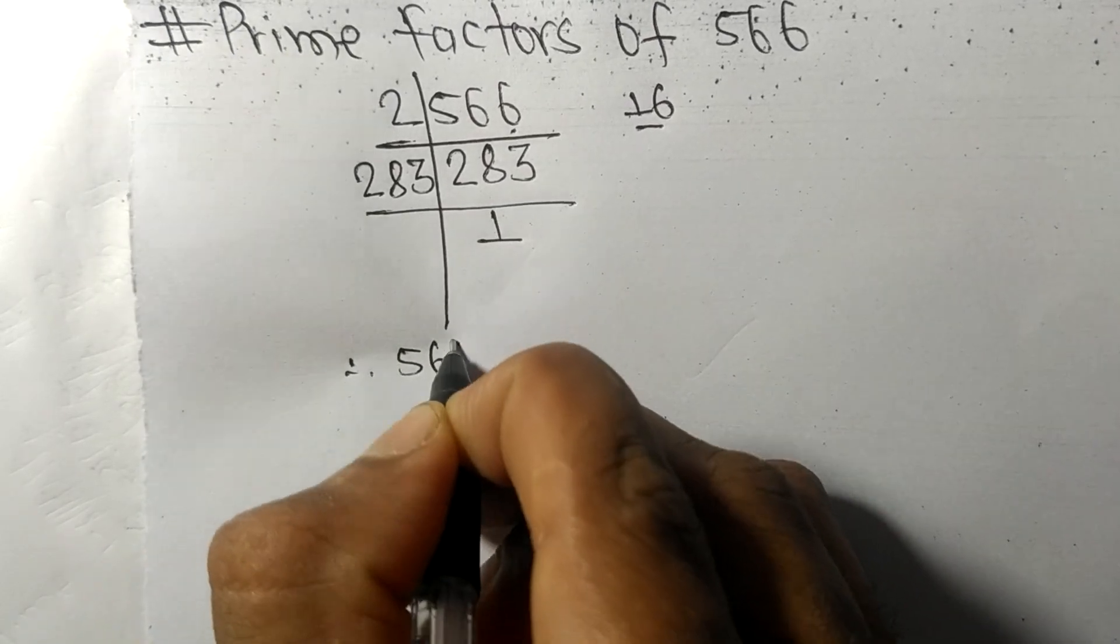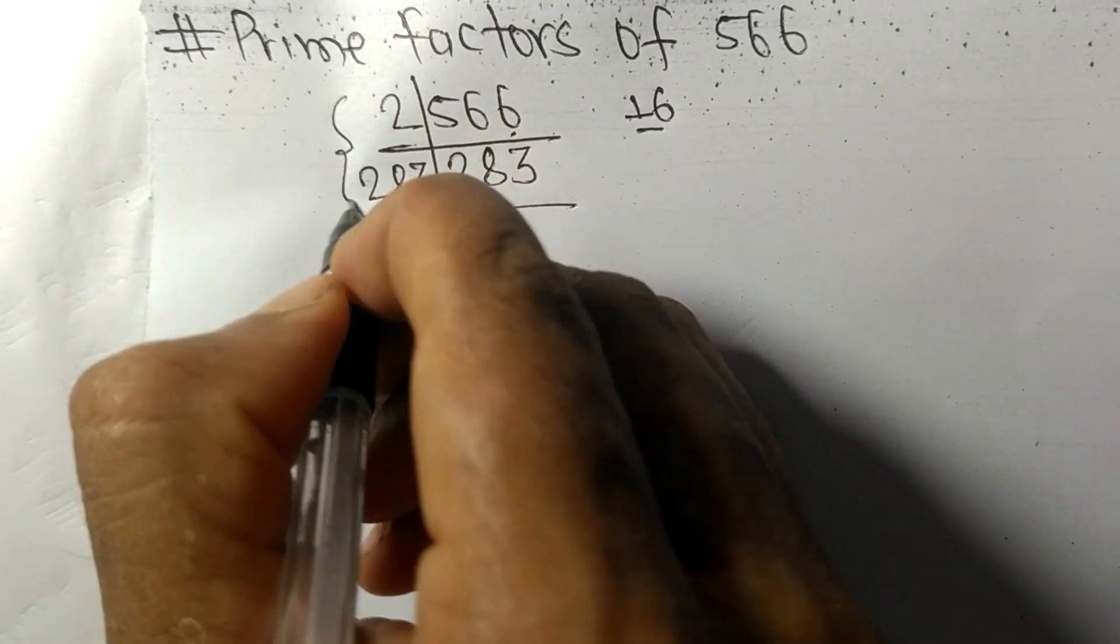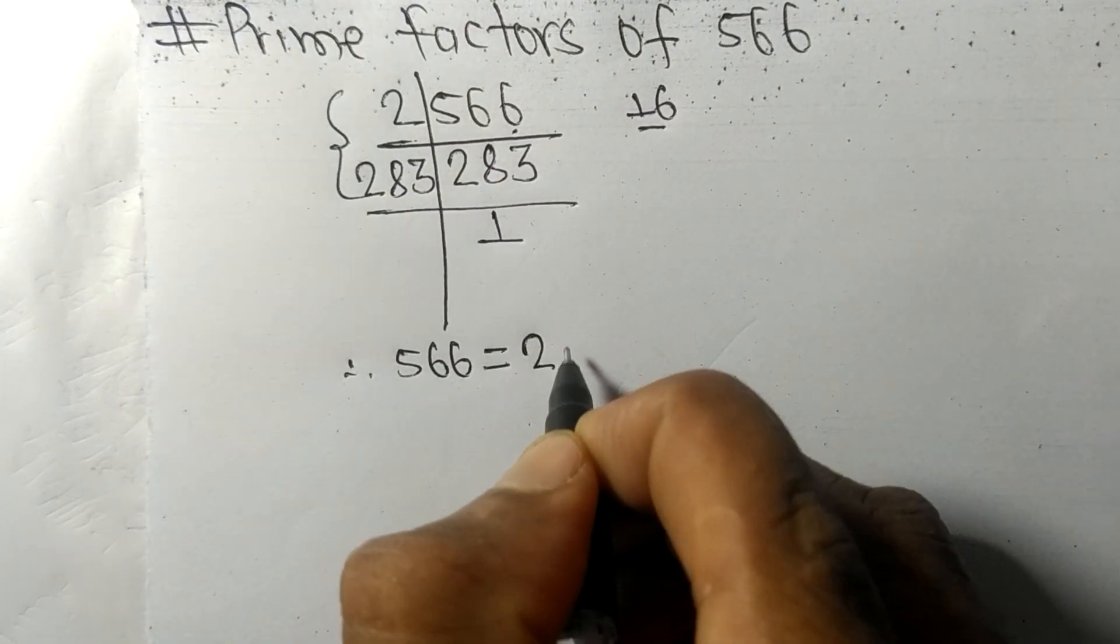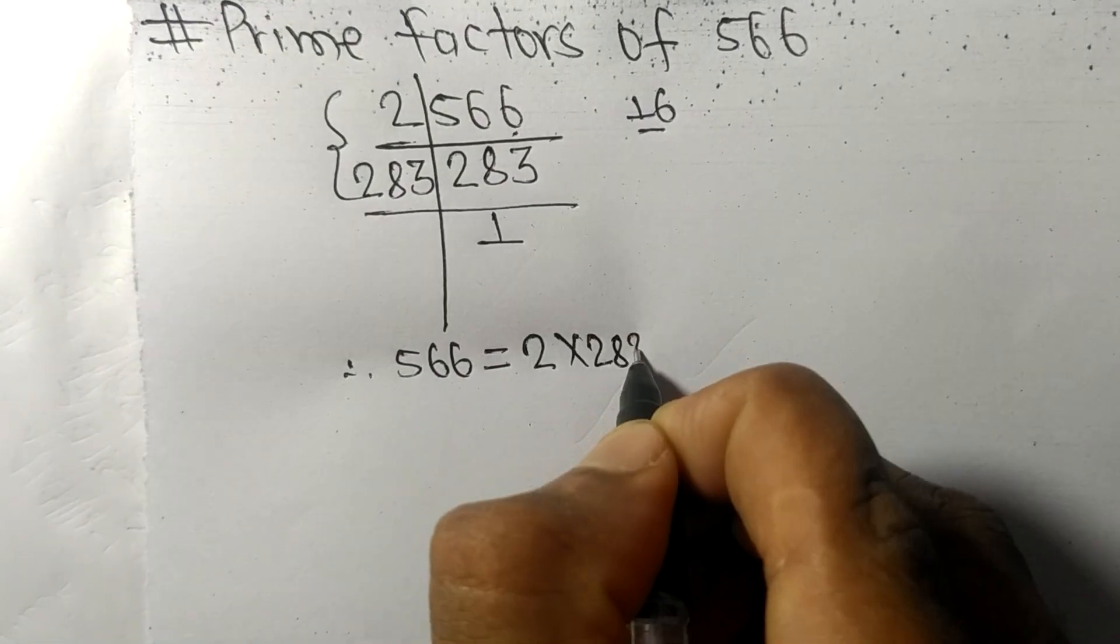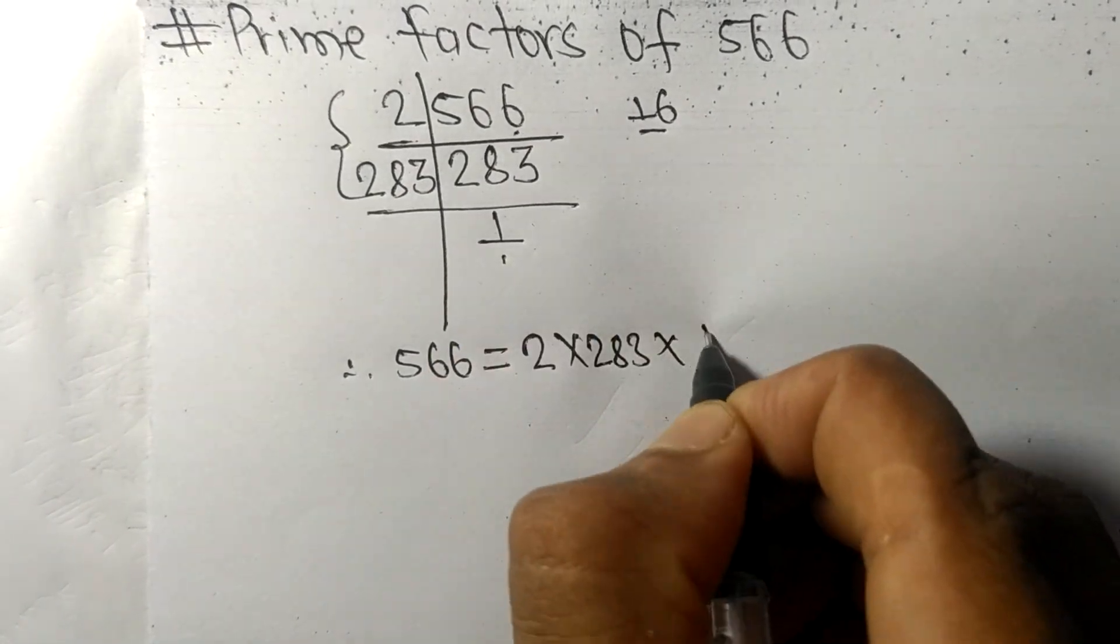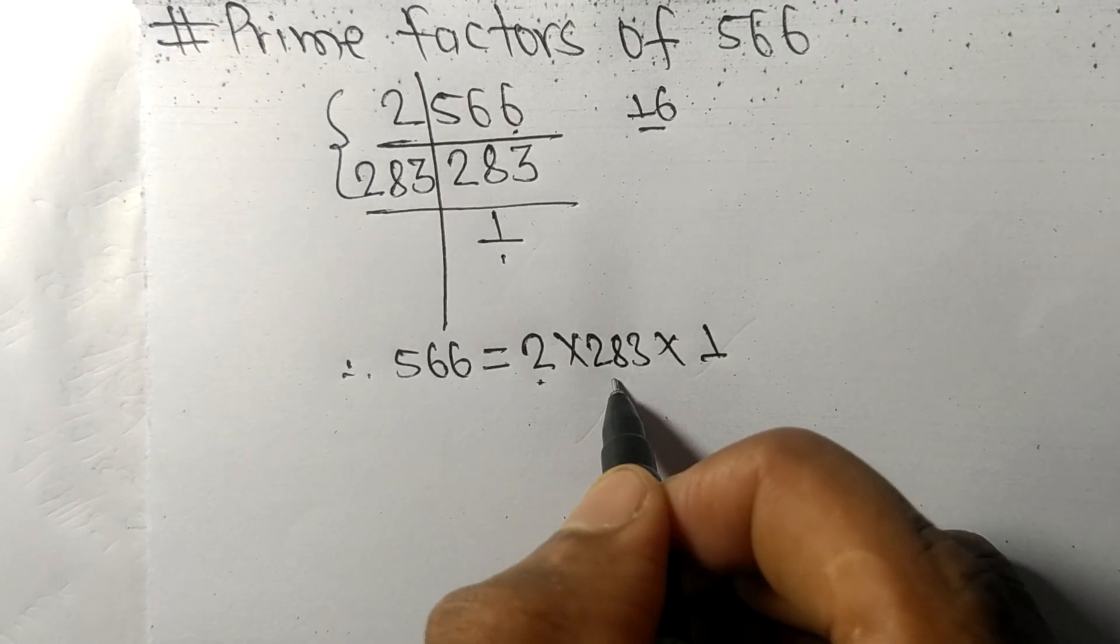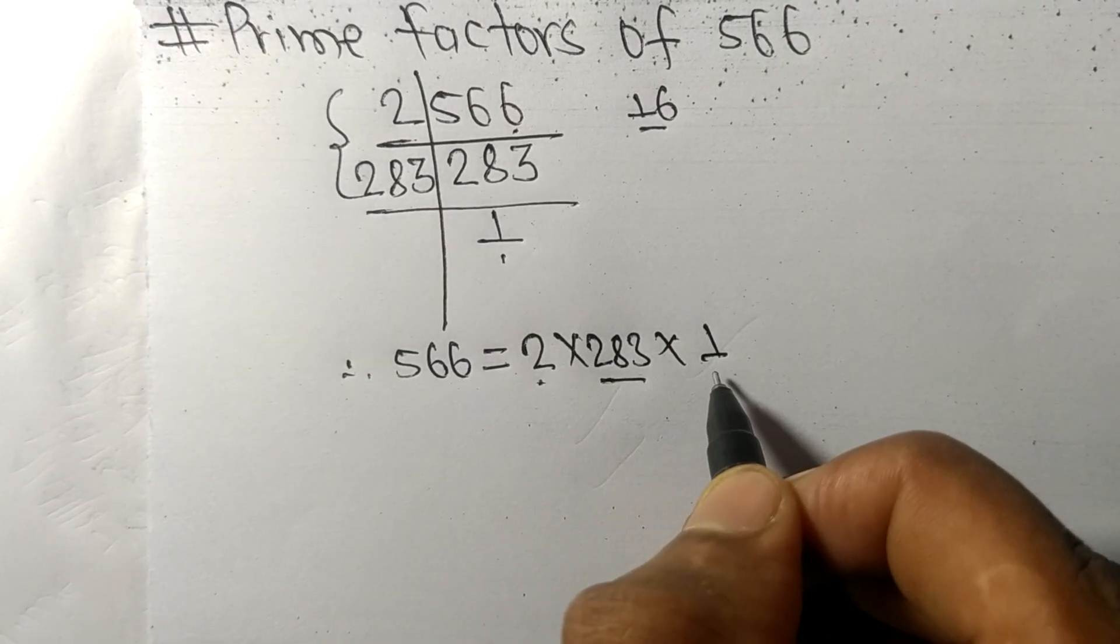566 is equal to, from this side it is 2 times 283 and this 1. So 2, 283, and 1 are the prime factors of 566.